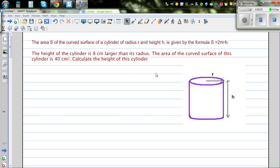The area S of the curved surface of a cylinder of radius r and height h is given by the formula S equals 2πrh. S is called the curved surface area.